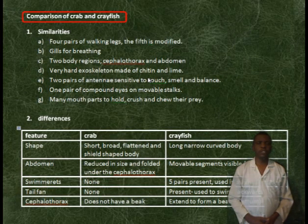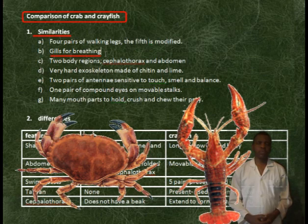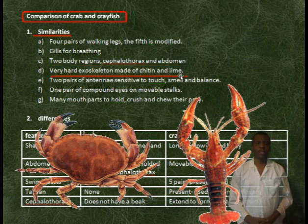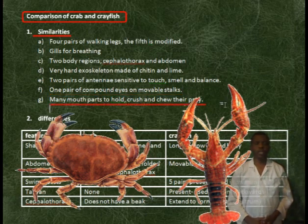Comparison of crab and crayfish. Similarities: four pairs of walking legs with modified feet; gills for breathing; two body regions — cephalothorax and abdomen; very hard exoskeleton made up of chitin and lime; two pairs of antennae sensitive to touch, smell, and balance; one pair of compound eyes on unmovable stalks; and many mouthparts to hold, crush, and chew prey.